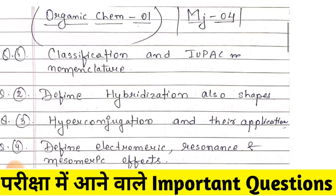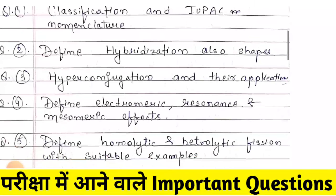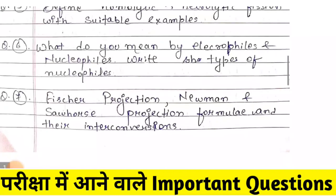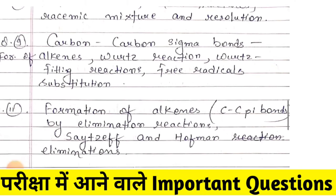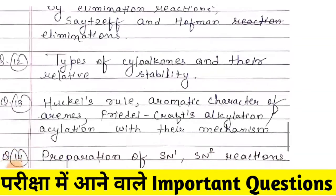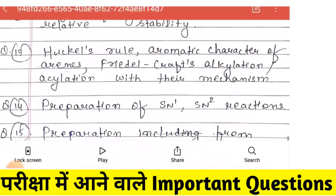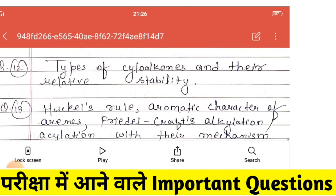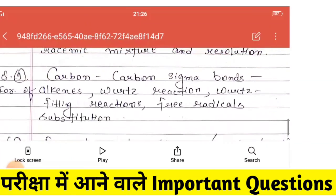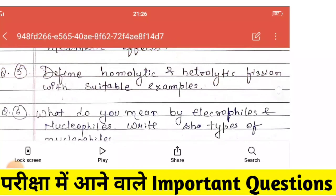Our second topic is hybridization. You will do this once your classification is complete. We want to show you in what form you have to write these most important questions. There are no questions outside these topics. You have to complete all these topics very well. There are a total of 15 questions, and you have to learn all 15 questions. We want to show you how to write answers.